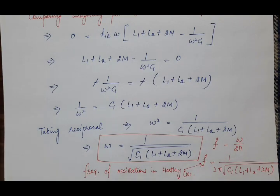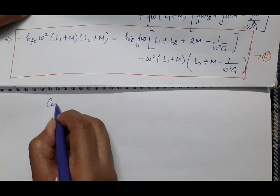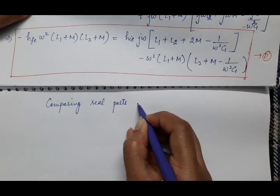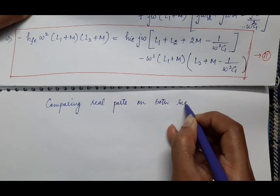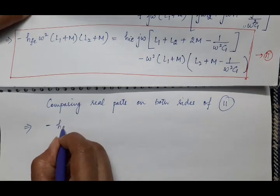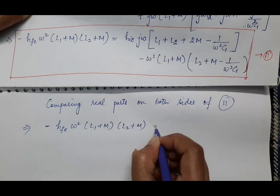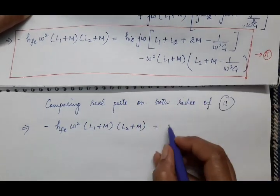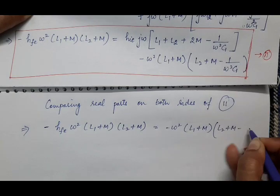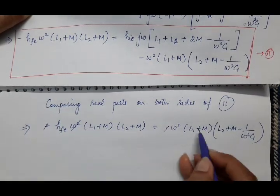Now we derive the Barkhausen criterion for sustained oscillations by comparing real parts on both sides of equation 11. The real part on the left-hand side is −hfe·ω²·(L1+M)·(L2+M), and the real part on the right-hand side is −ω²·(L1+M)·(L2+M − 1/(ω²C1)). The negative signs cancel, ω² cancels, and (L1+M) cancels on both sides.